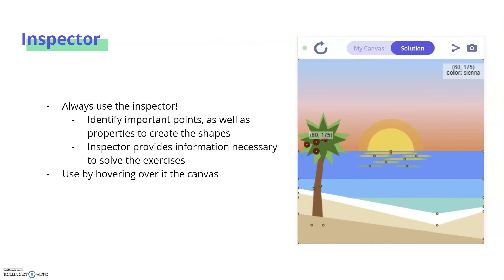An important feature that is part of the CS Academy curriculum is the inspector. You should always use the inspector when you are doing exercises. It's super important for identifying important points, as well as properties to create the shapes that you need to solve the exercises. The inspector provides information necessary to solve them. As you can see over here, whenever you hover over the canvas, you will see all of these points pop up that are major points to help you draw the shapes necessary to complete the exercise. You will also see the colors, the point values, and based on this, you can go about completing the exercises.